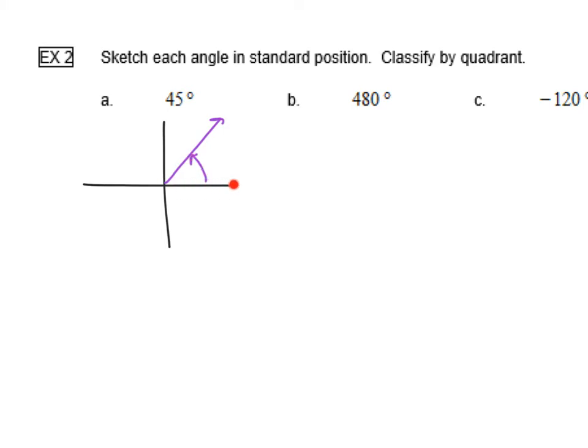It's assumed that this is the initial side. Maybe I should just go ahead and draw it in, but I understand if that is not drawn in as well. Classified by quadrant, this is a first quadrant angle.